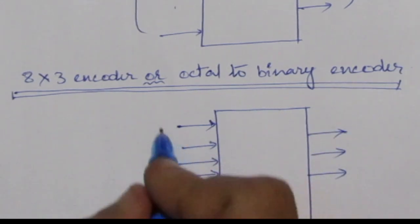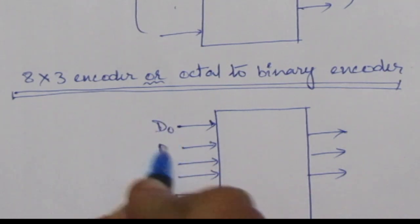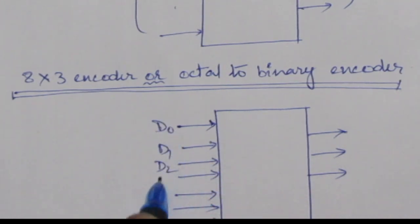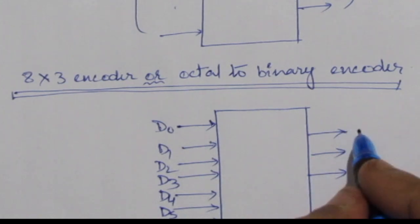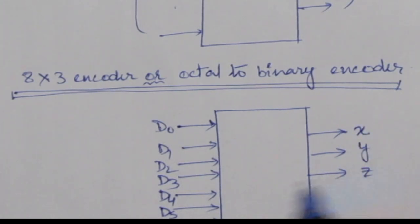Suppose the input lines are d0, d1, d2, d3, d4, d5, d6, d7. And the outputs are x, y, z. This is just the opposite of the previous case.